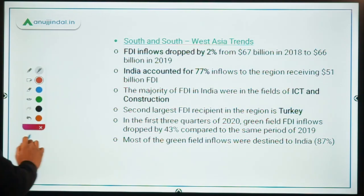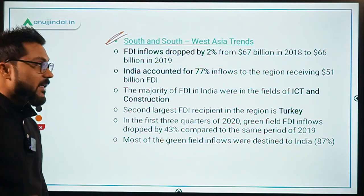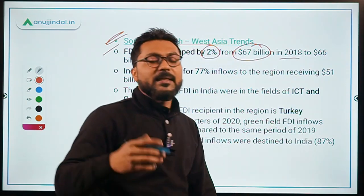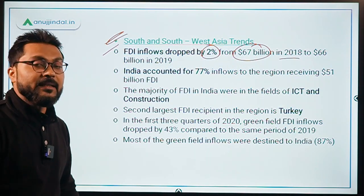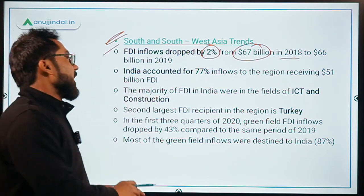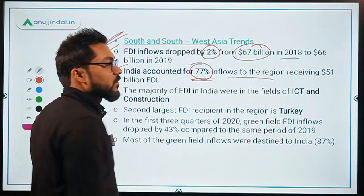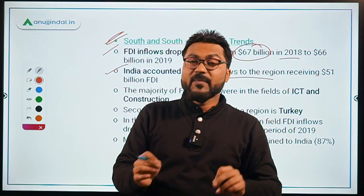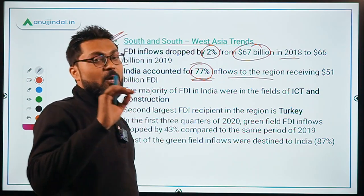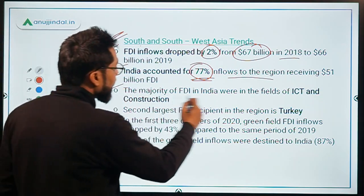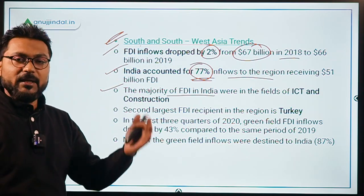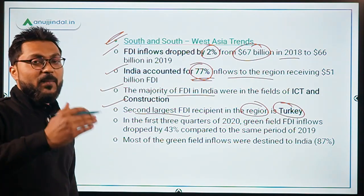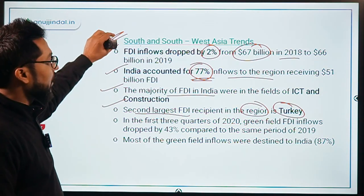For South and South-West Asia, FDI inflows dropped by just 2%, from 67 billion dollars in 2018 to 66 billion dollars in 2019. India accounted for 77% of inflows to the region, receiving 51 billion dollars of FDI, with the majority in ICT and construction sectors. Turkey was the second largest FDI recipient in this region.